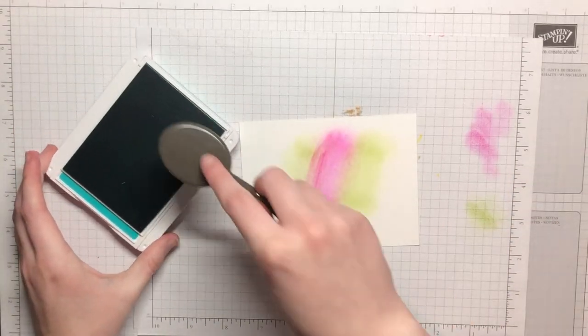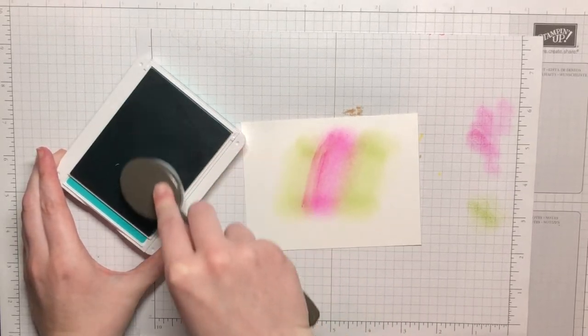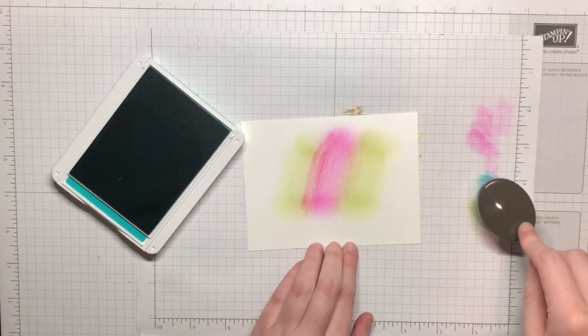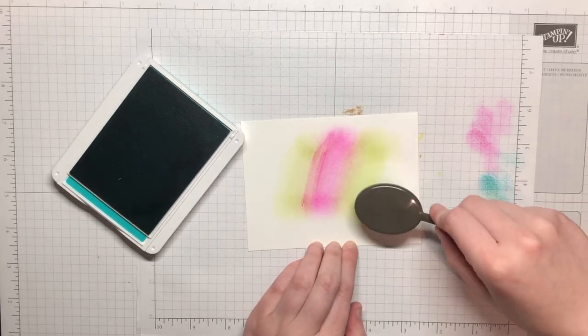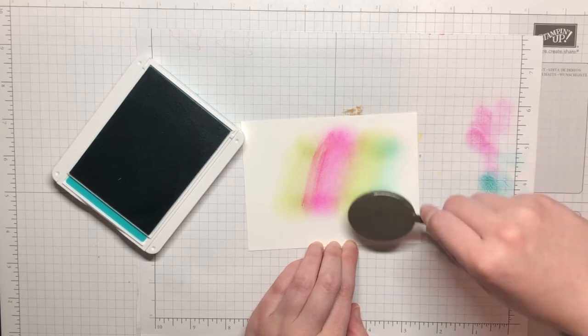Now that I've got that green on there I'm gonna do my Bermuda Bay. My Bermuda Bay is opened and I've got my teal blending brush. So I'm picking up some color here. Again, dab off on the side. And I'm just gonna kind of blend this color a little bit into that green.